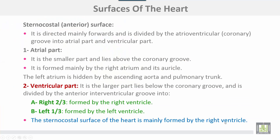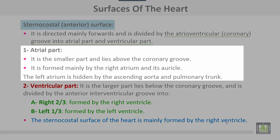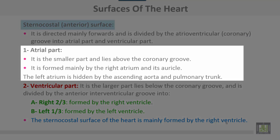The sternocostal surface of the heart, or anterior surface, is directed mainly forwards and is divided by the atrioventricular or coronary groove into an atrial part and a ventricular part. The atrial part is the smaller part and lies above the coronary groove. It is formed mainly by the right atrium and its auricle. The left atrium is hidden by the ascending aorta and the pulmonary trunk.